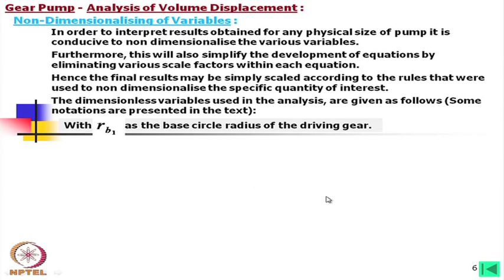The fixed dimension will be the base circle, on which the involute is generated. If you introduce profile correction — meaning the profile is shifted — we may have a different pitch circle radius. Even with uncorrected gears, if they mesh with an enlarged center distance, we will have a new pitch circle radius, but the base circle radius will remain constant. That is why this parameter is taken as the reference parameter for non-dimensionalization. We use a caret (hat) to denote the dimensionless quantities.